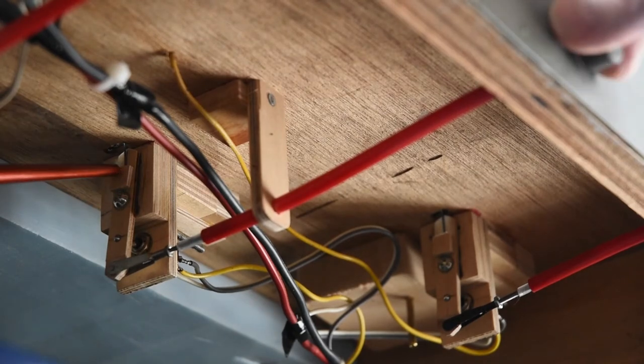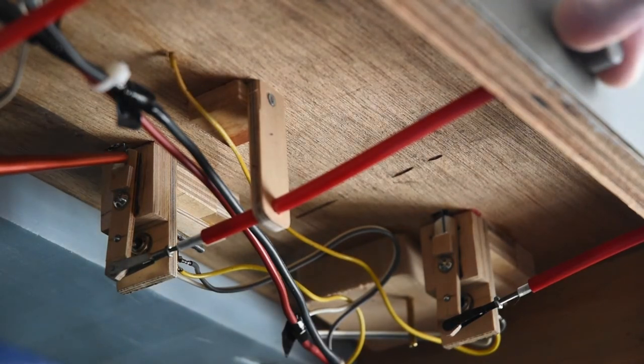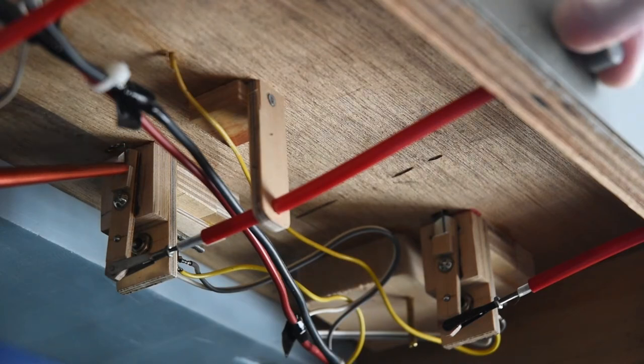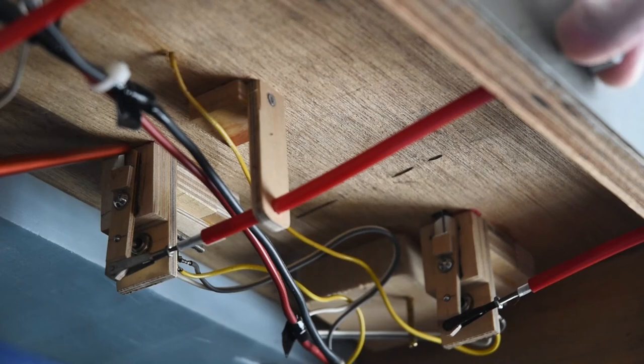And then there's a little block epoxied on with a little hole drilled in, and this music wire, flexible music wire, is epoxied in place as well and goes up through the throw bar and the turnout.